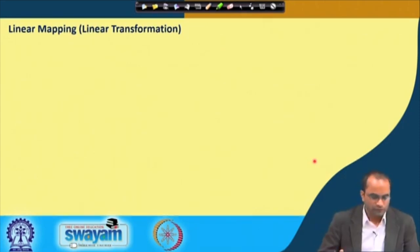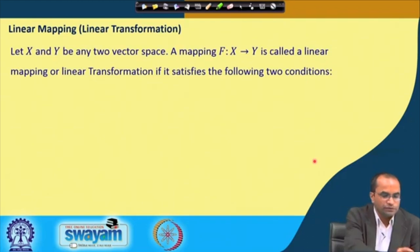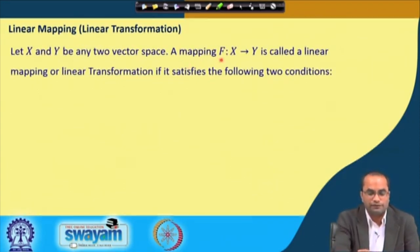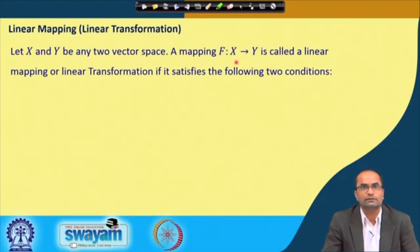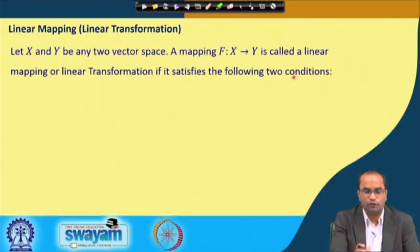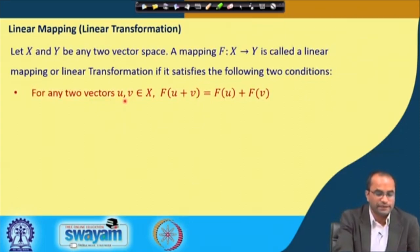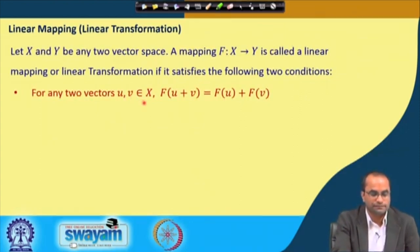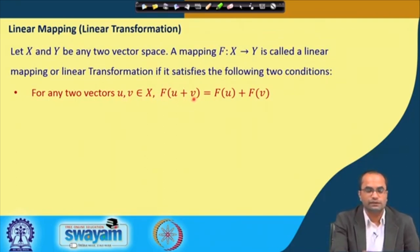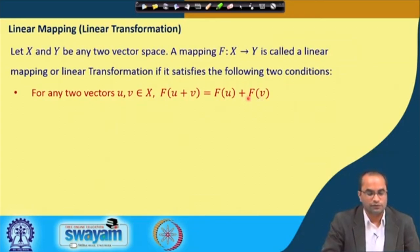Let me start with what is a linear mapping or linear transformation. Let X and Y be two vector spaces. A mapping F from X to Y is called a linear transformation or linear mapping if it satisfies the following two conditions: for any two vectors u and v from vector space X, F(u+v) should be equal to F(u) plus F(v). That is one of the two required conditions.